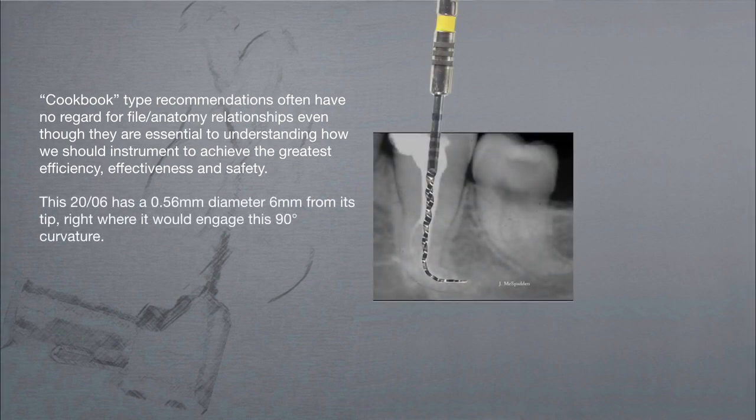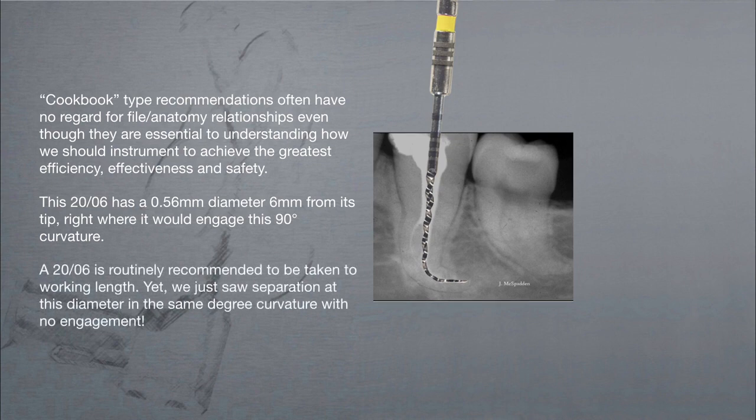This 2006 has a .56 millimeter diameter 6 millimeters from its tip, right where it would engage this 90 degree curvature. A 2006 is routinely recommended to be taken to working length, yet we just saw separation at this diameter in the same degree curvature with no engagement.